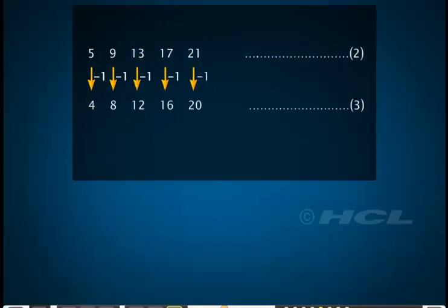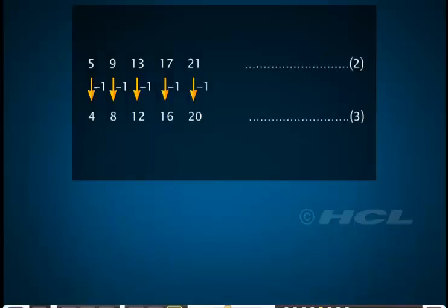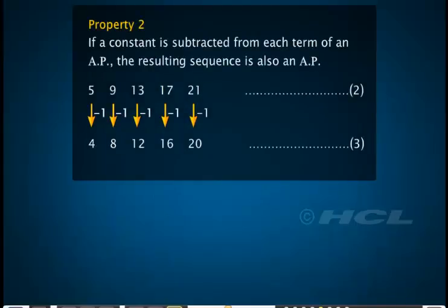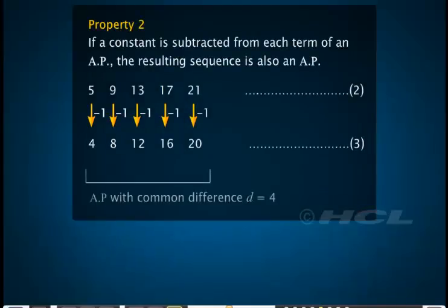Now subtract 1 from each term of the AP to get a sequence of numbers denoted by 3 as shown. Note that the resulting sequence 3 is also an AP with the common difference 4. So we can see that if a constant is subtracted from each term of an AP, the resulting sequence is also an AP.